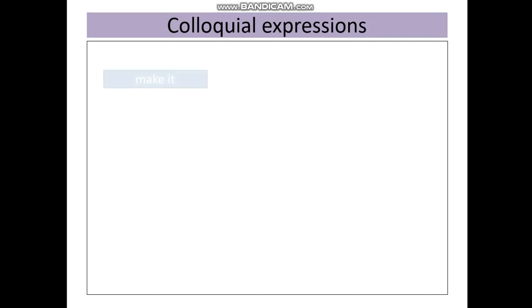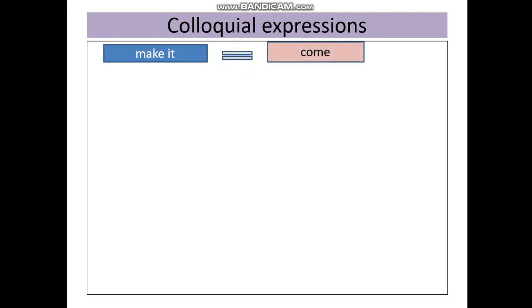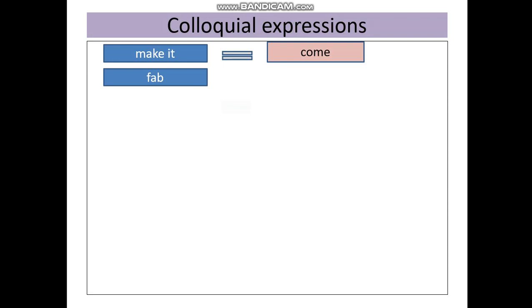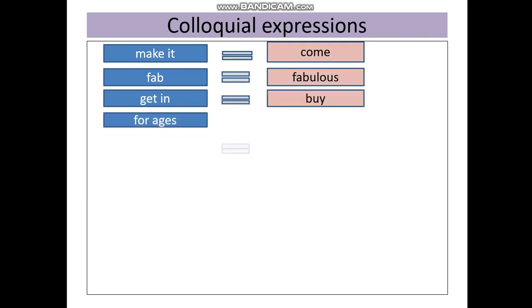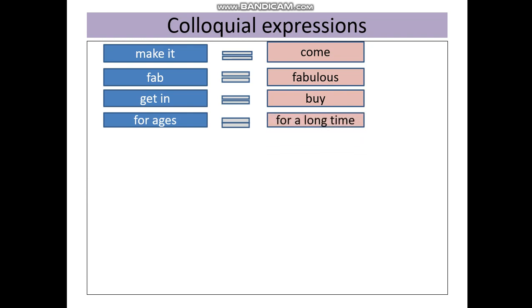Now we are going to discuss some more examples of colloquial expressions you can use when writing to friends. 'Make it' stands for 'come.' 'Fab' is the short form of the adjective 'fabulous.' 'Get in' is similar to 'buy.' 'For ages' is the same as 'for a long time.'